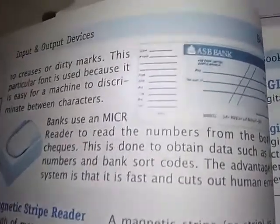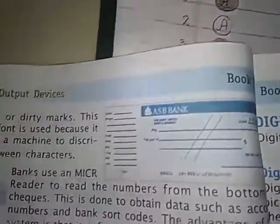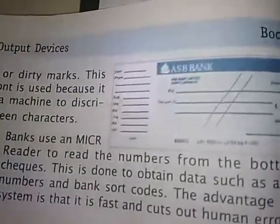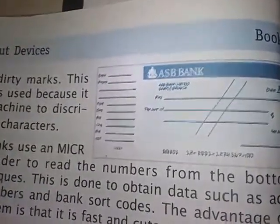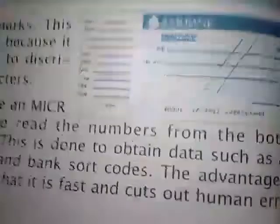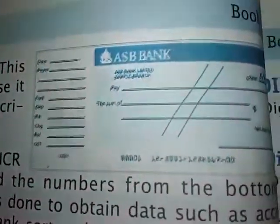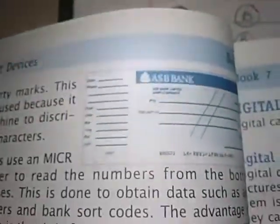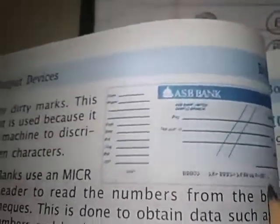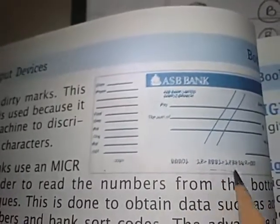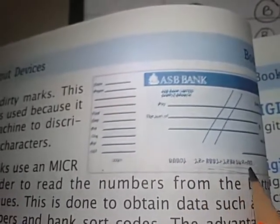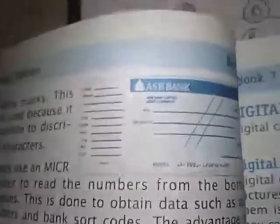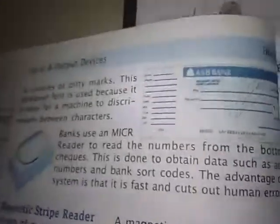Ab M-I-C-R kya hota hai — aapko jo bank ki checkbook milti hai, us mein kuch checks hote hain. Un checks ke neeche, jaise ki ASB bank ka check bana hua hai example ke taur pe, bottom per ek code diya hua hai. Ye jo characters likhe hue hain bottom per, inko M-I-C-R kehte hain.